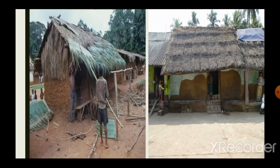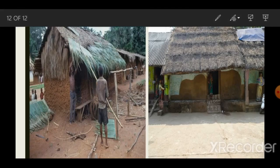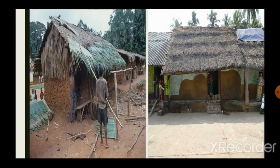This is how agricultural waste, instead of going to waste, is used in the construction industry and waste is minimized. In the next class we will be talking about industrial waste. Till then, thank you.